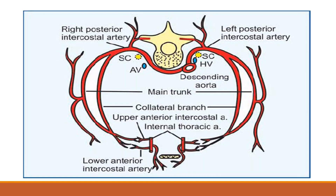Each intercostal space is supplied by a pair of anterior and posterior intercostal arteries. There are 11 intercostal spaces. For the first nine spaces, the anterior intercostal arteries arise from the internal mammary artery, which is a branch of the first part of the subclavian artery.